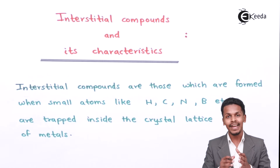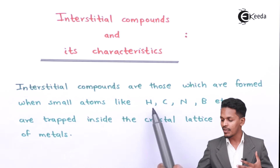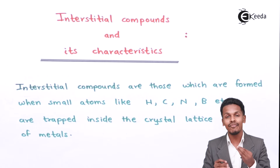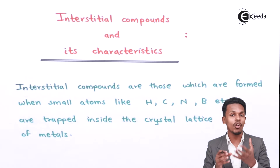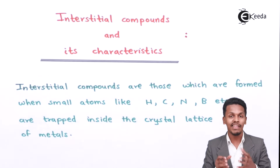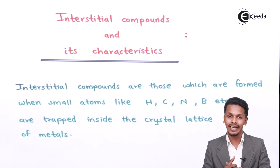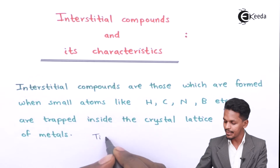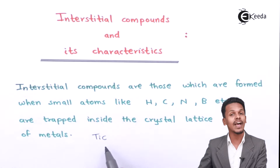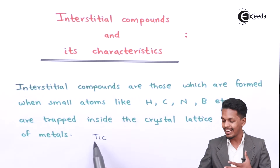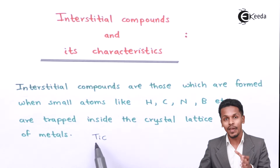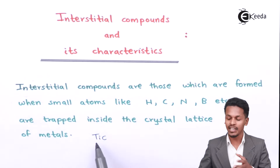These smaller atoms — carbon, hydrogen, nitrogen — acquire a small space in the crystal lattice, creating a defect in it. For example, in titanium carbide (TiC), carbon acts like an impurity and acquires a position in the crystal lattice of titanium.